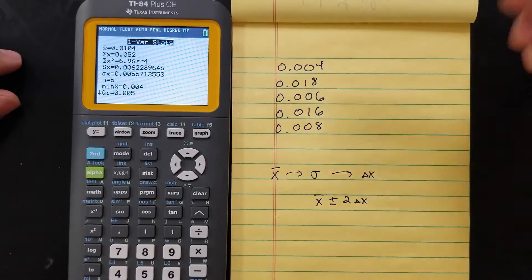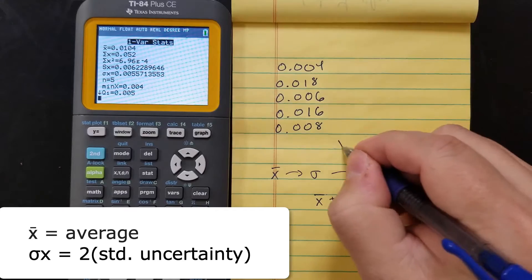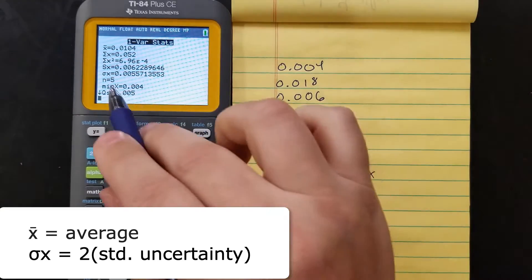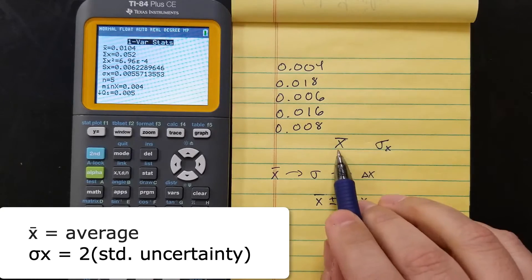The stuff you need is your average, which is the first number. So you need the X bar, and you also need the bottom one, the sigma X. That's your average.